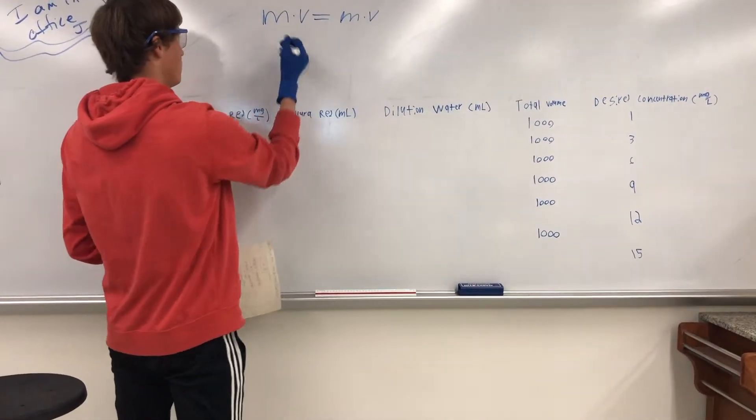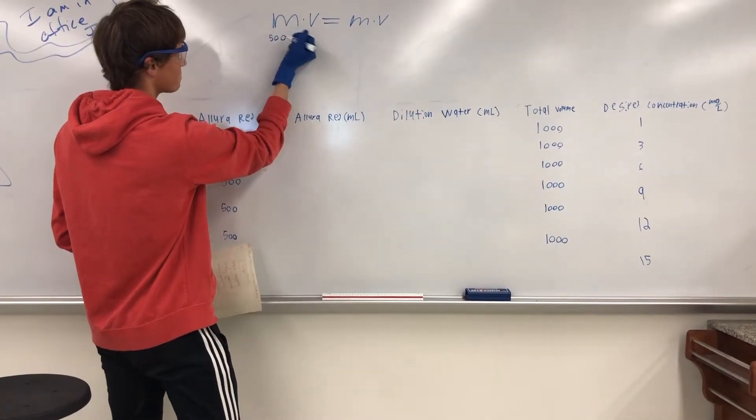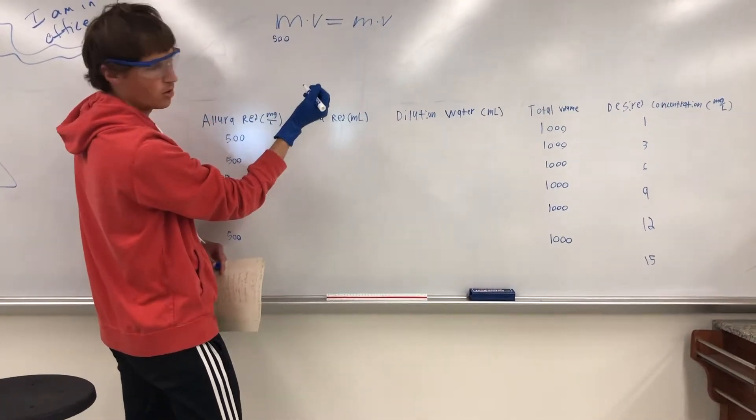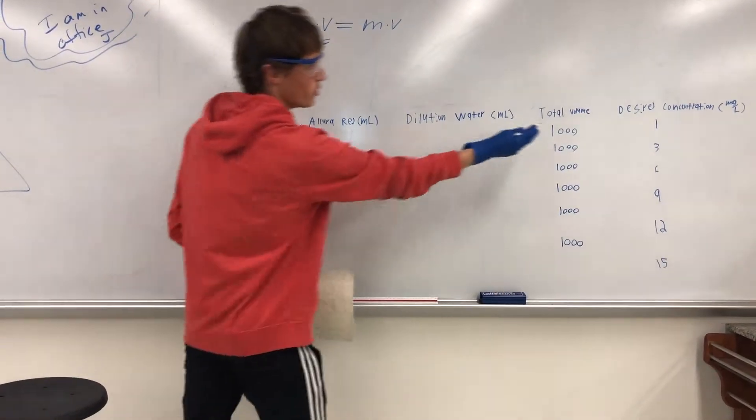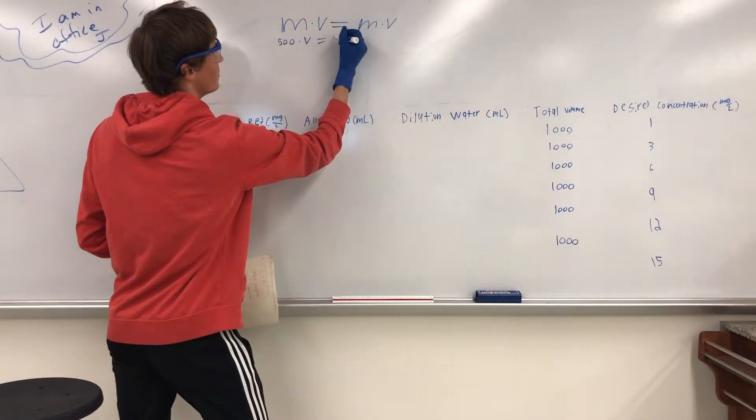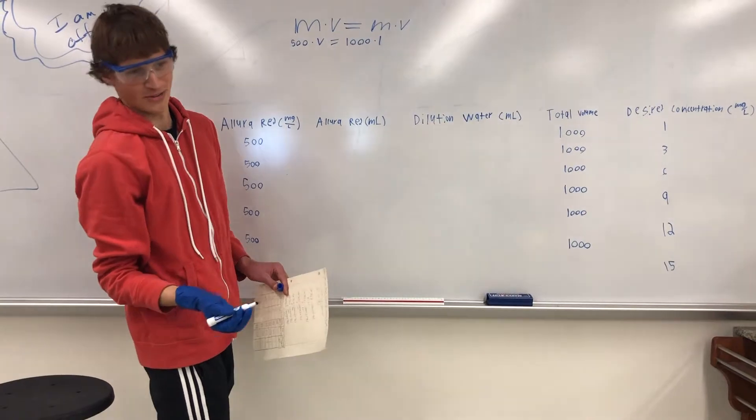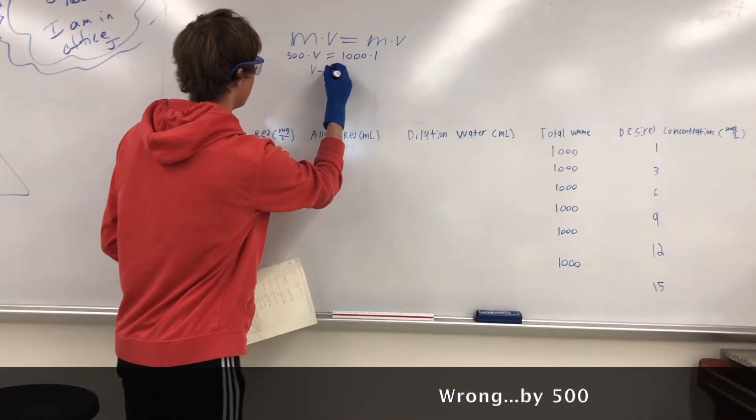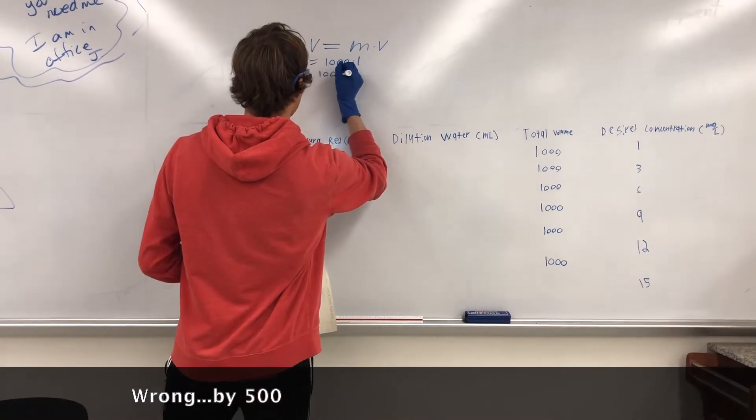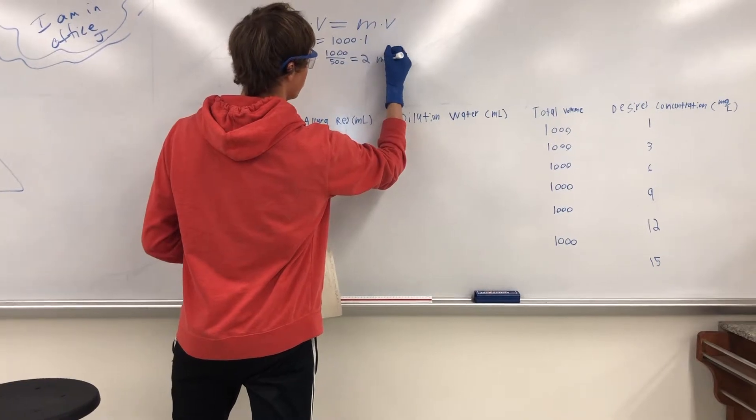So to begin, we need to plug in 500 milligrams per liter and multiply this by our volume of Valora Red in milliliters, and set this equal to our total volume times our desired concentration. Now, this math is extremely difficult. So we need to divide a thousand by five. And this gives us a volume of Valora Red of two milliliters.